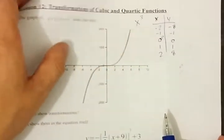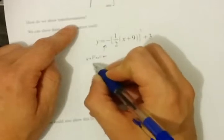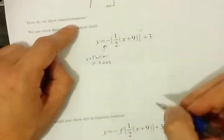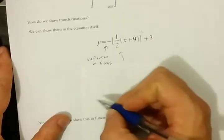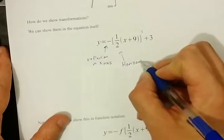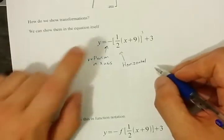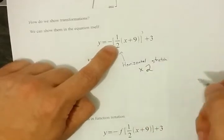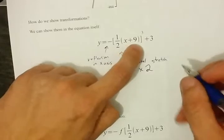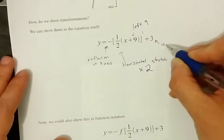The function y equals x cubed can be transformed however you want. What does the negative in front mean? That means it's a reflection in the x-axis — a vertical flip. What does one-half mean on the inside of the brackets? Because it's on the inside, it means it's a horizontal change. Because it's multiplied, it's a stretch or a compression. And because it's a half, it's actually a horizontal stretch by a factor of 2 — remember, horizontal is backwards. A plus 9 on the inside of the bracket means a shift left of 9. And this plus 3 means a shift up 3.